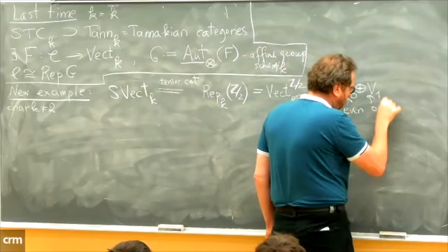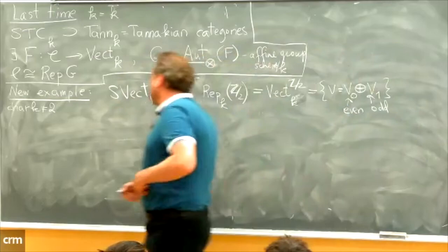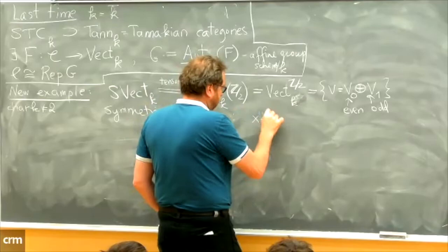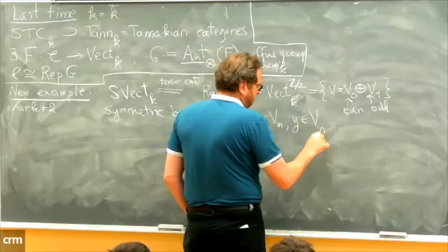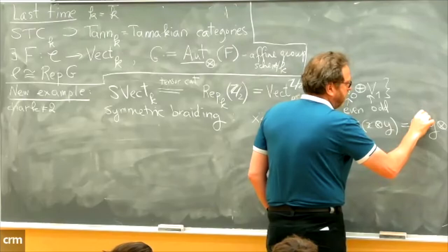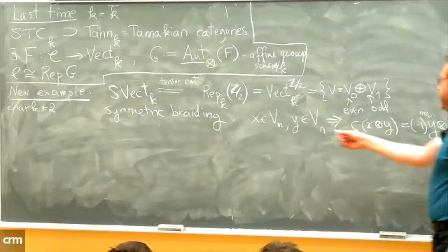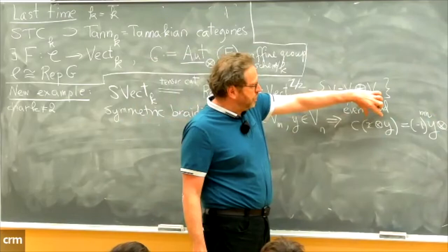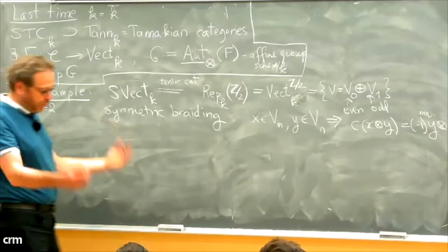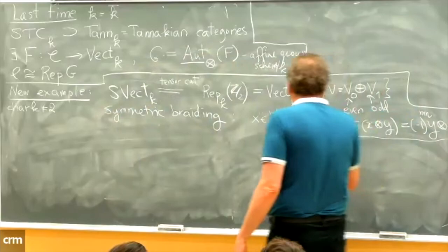These are finite-dimensional spaces with the usual tensor product, but the braiding is different. The symmetric braiding is defined so that if x belongs to Vₘ and y belongs to Vₙ, then c acting on x⊗y gives not the usual flip y⊗x, but there is a sign (−1)^{mn}. The only difference from the usual case is when both m and n are 1 — both x and y are odd — in which case c not only flips them but also multiplies by −1. This is very familiar from exterior forms on a vector space or cohomology, and arises often in mathematics.